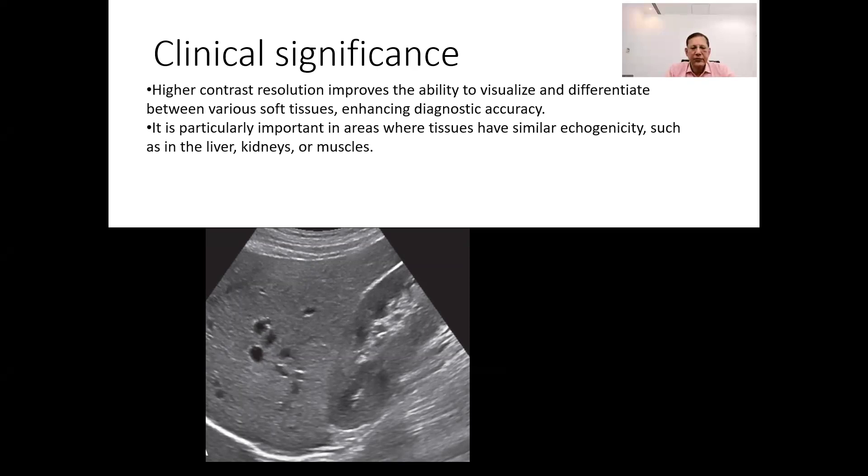A wider dynamic range improves contrast resolution by allowing the system to display more levels of gray shades. Adjusting the dynamic range can help in enhancing the visibility of subtle differences between tissues that have similar echogenicity.